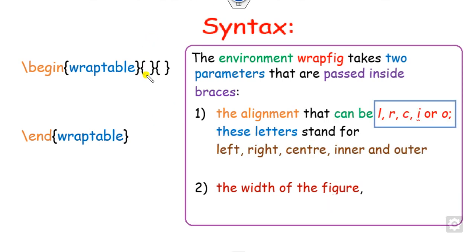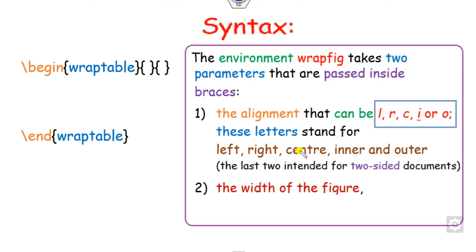For the alignment parameter: L represents left, R is for right, C is for center, I is for inner, and O is for outer. The inner and outer options are used when you are working with a two-sided manuscript.